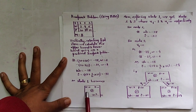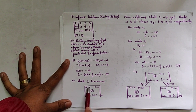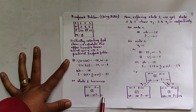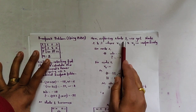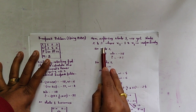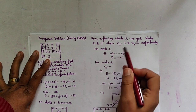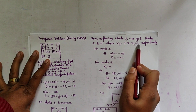Node 1 is the root where we haven't selected any item yet, so w=0 and p=0. The upper bound is -28 and the lower bound is -32. Exploring node 1, we get node 2 and node 3, where x1 indicates whether the first item is selected or not.